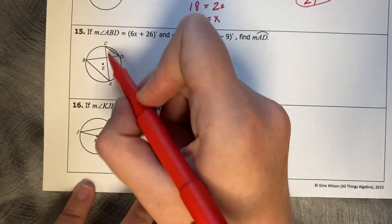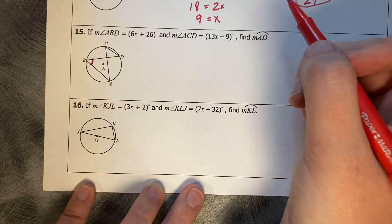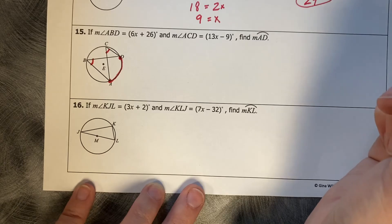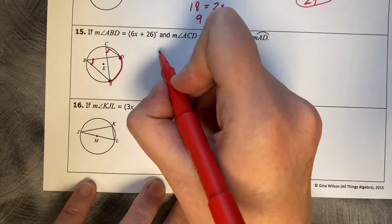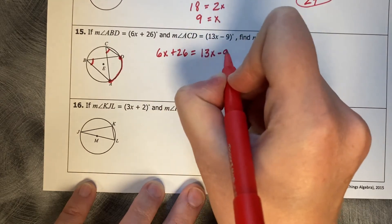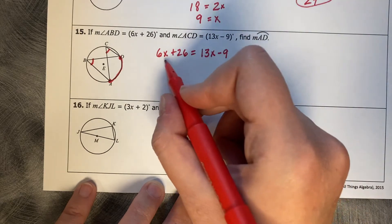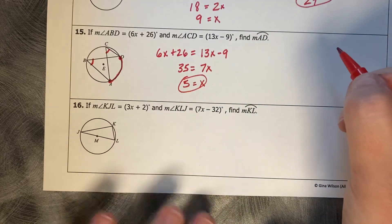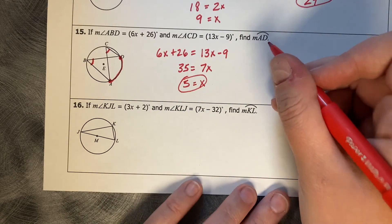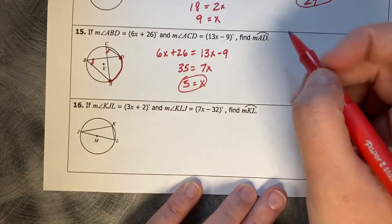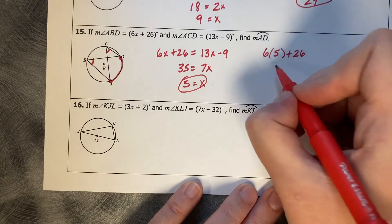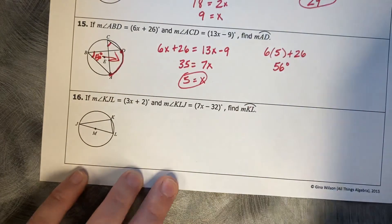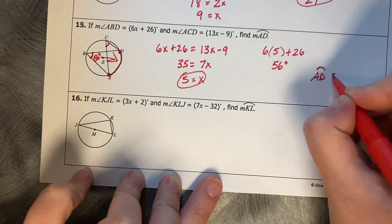All right. 6X plus 26 is ABD. So that's this guy. And ACD is this guy. And they share this arc measure of AD. So that means that they are going to be the same. So 6X plus 26 equals 13X minus 9. They're the same measure. So minus 6 is going to be 7X. And plus 9 is going to be 35. So X equals 5. We need to plug it back in to get the measure of AD. So first, we're going to plug it into one of the angle measures. Let's just pick one that looks friendly. So 6 times 5 plus 26, 30 plus 26 is 56 degrees. So this angle measure is 56 degrees. And when you match it to its arc, we double it. So AD is 112 degrees.